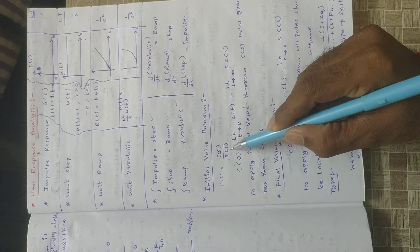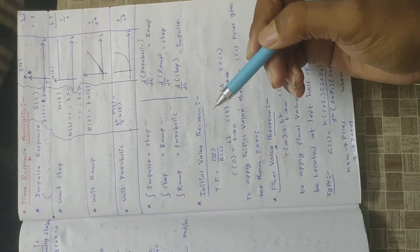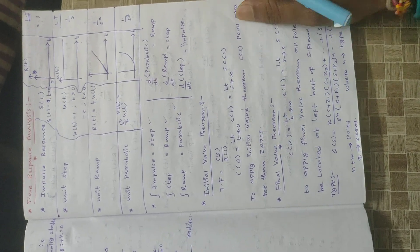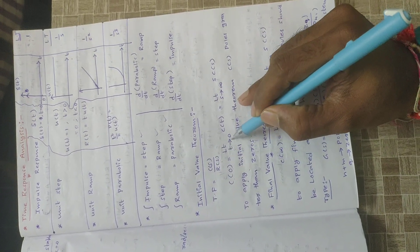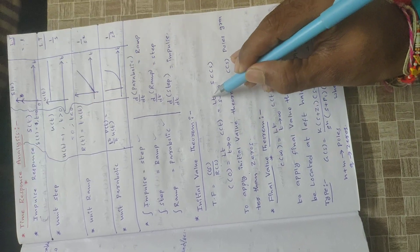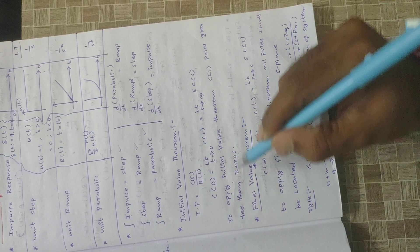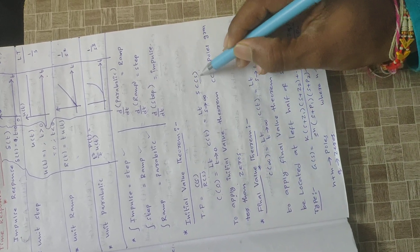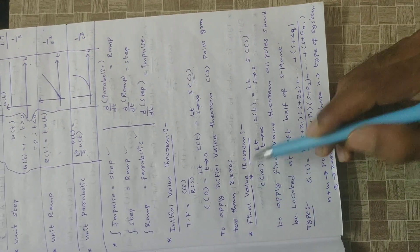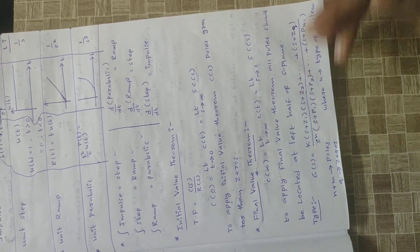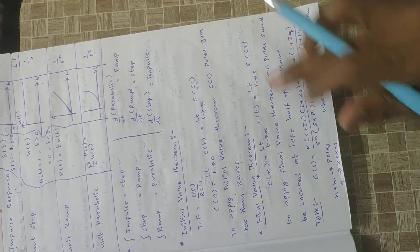Next, two important theorems: the initial value theorem and the final value theorem. The transfer function is C of s by R of s. C of s equals the transfer function times R of s, where R of s is the reference input — step, impulse, ramp, or parabolic. For the initial value theorem, c of 0 equals the limit as t tends to 0 of c of t; in the s-domain this is the limit as s tends to infinity of s into C of s. For this theorem, the degree of the denominator of C of s must be greater than the numerator. The final value theorem gives c of infinity equals the limit as s tends to 0 of s into C of s.